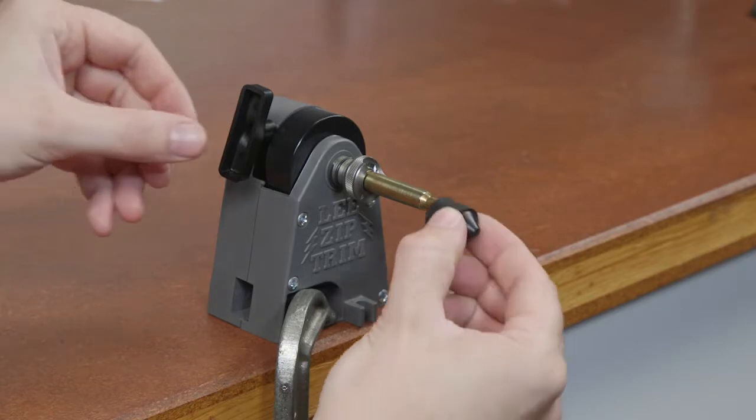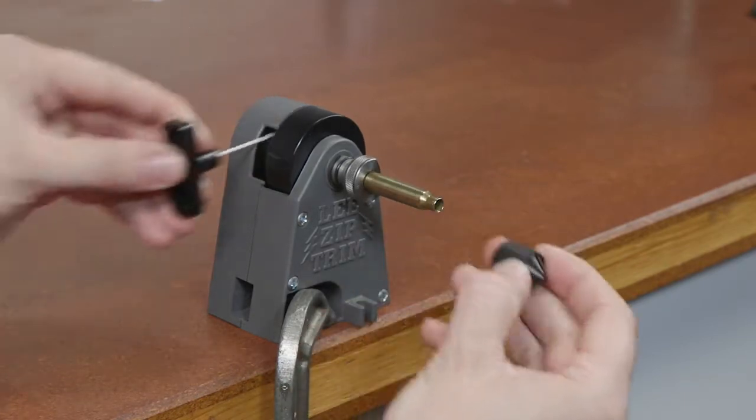The body of the Zip Trim has two mounting lugs and a socket to accept a C-clamp for portable setup.